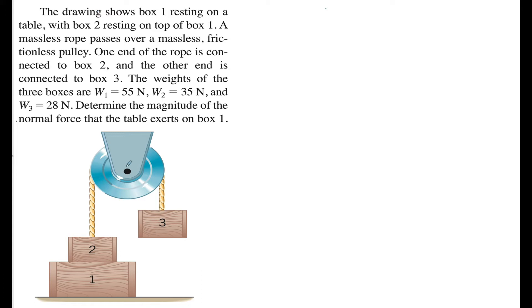The drawing shows box 1 resting on the table with box 2 resting on top of box 1. A massless rope passes over a massless frictionless pulley, so we don't have to worry about any forces or torques being applied by the pulley. One end of the rope is connected to box 2, the other end is connected to box 3. The weights of the three boxes are W1 = 55 N, W2 = 35 N, and W3 = 28 N. Determine the magnitude of the normal force that the table exerts on box 1.